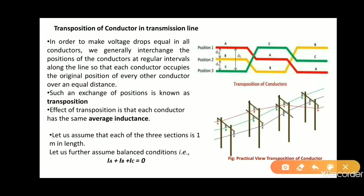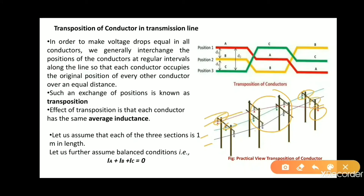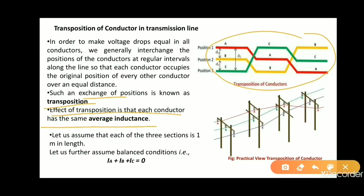In the practical view we can see conductor A, conductor B, conductor C — here is the transposition point, and after transposition conductor A, conductor C, and conductor B have exchanged positions. This exchange of positions is known as transposition. The effect of transposition is that each conductor has the same average inductance, so inductance will be equalized and all phases will be the same.